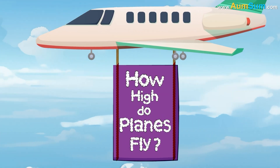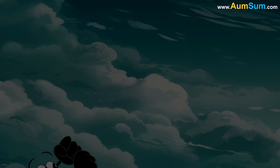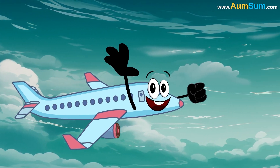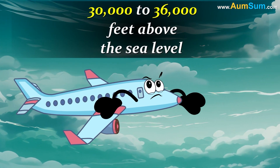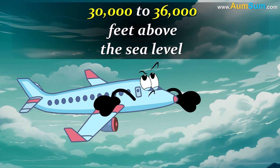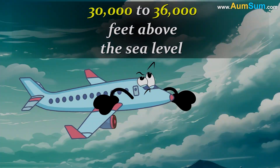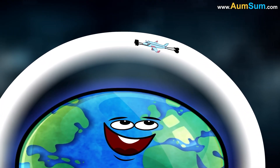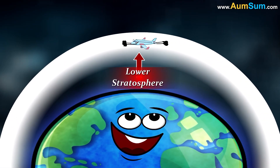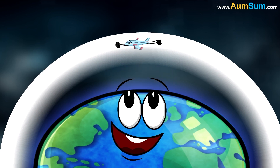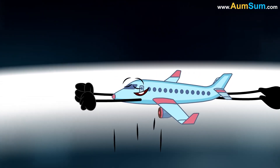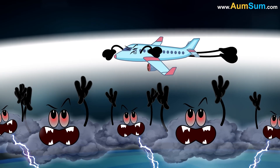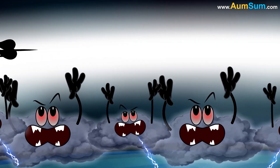How high do planes fly? Commercial airplanes fly at altitudes ranging between 30,000 to 36,000 feet above sea level. Flying at such an altitude places the airplane in the lower stratosphere of planet Earth, which is located above the clouds, helping protect the airplane against bad weather.